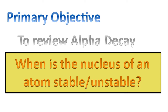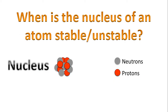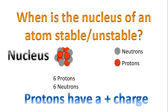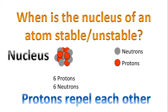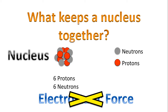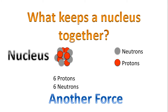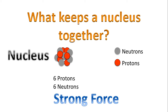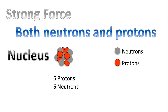The first question we'll answer is: when is the nucleus of an atom stable or unstable? Here's a nucleus of an atom — let's focus on counting the number of neutrons and protons. We know that protons have a positive charge, which means protons will repel each other. This is called the electrostatic force. So the real question is: what keeps a nucleus together? It's not the electrostatic force, since the protons are repelling each other, so there must be another force. This force is called the strong nuclear force, or just the strong force. The strong force interacts between neutrons and protons, neutrons and neutrons, and protons and protons, and is attractive in nature.